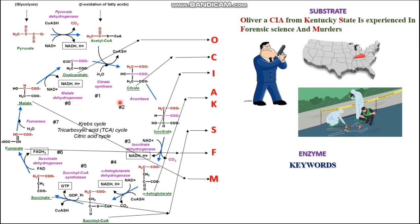So except aconitase, all these enzymes can be easily remembered. Since aconitase is the only difficult one to remember, it is becoming an odd one and you can easily remember that also. So overall, now we are clear how to memorize the enzyme names along with the substrate names.